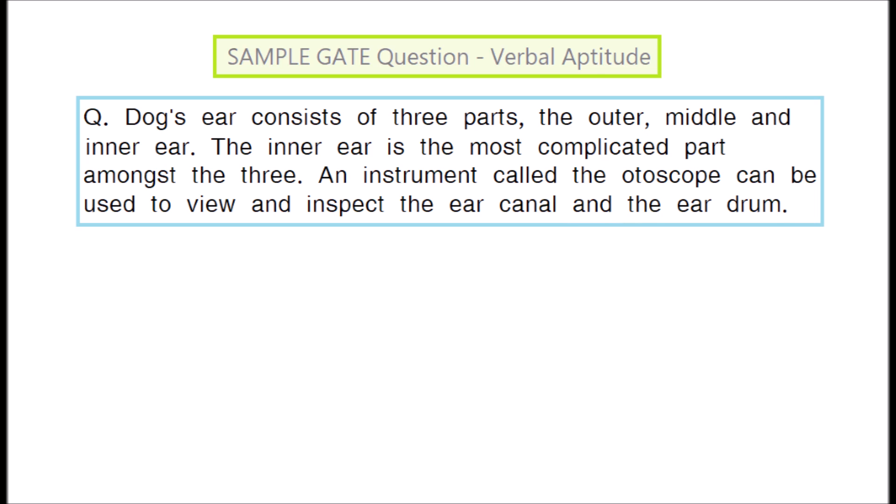Question 1. Dog's ear consists of three parts, the outer, middle and inner ear. The inner ear is the most complicated part amongst the three. An instrument called the otoscope can be used to view and inspect the ear canal and the eardrum.